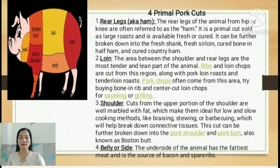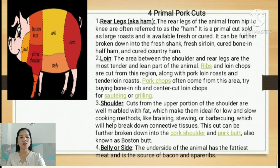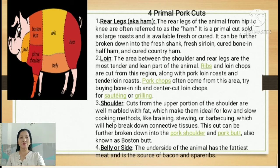The second primal cut of pork is the loin — the area between the shoulder and the rear legs, and the most tender and lean part of the animal. The ribs and loin chops are cut from this region, along with pork loin roast and tenderloin roast. The pork chops also come from this area, including bone-in ribs and center-cut loin chops suitable for sautéing and grilling.